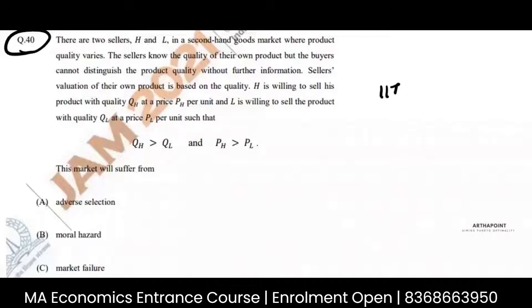This is question number 40 of IED Jam Economics 2021 paper. Let's see what the question is saying. There are two sellers, H and L.